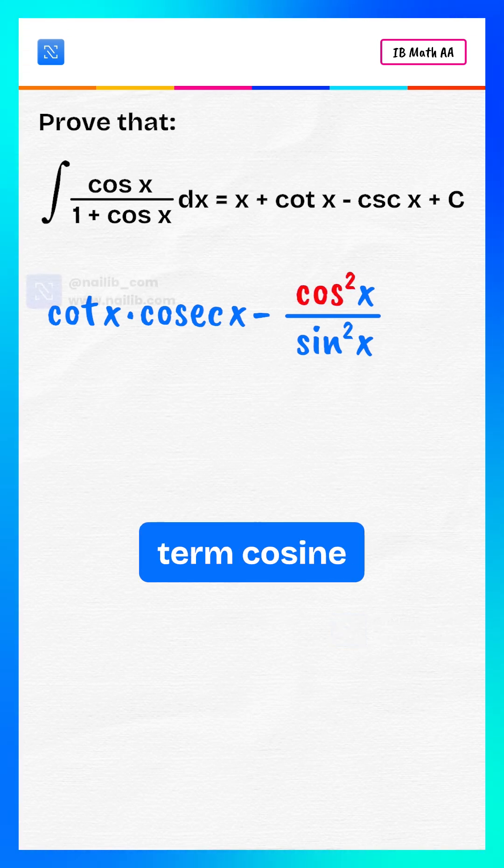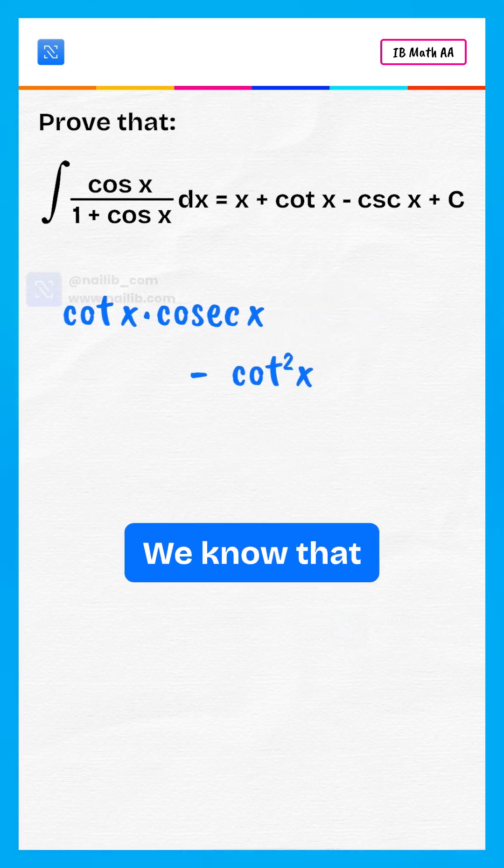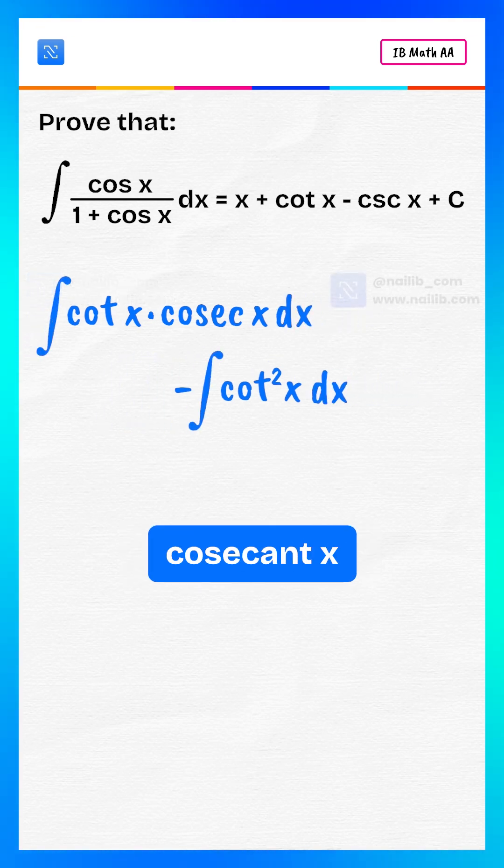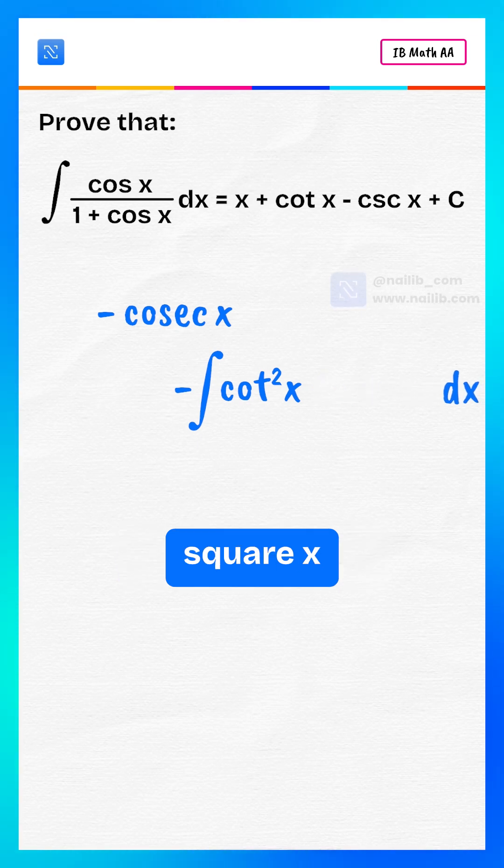Second term: cosine square x over sine square x. That's cotangent square x. We know that integral of cotangent x times cosecant x is minus cosecant x and cotangent square x is cosecant square x minus 1.